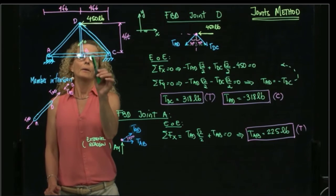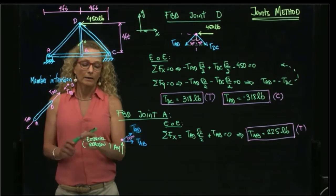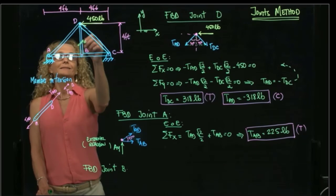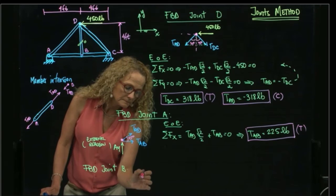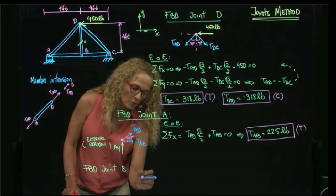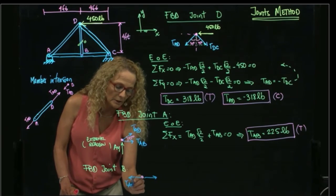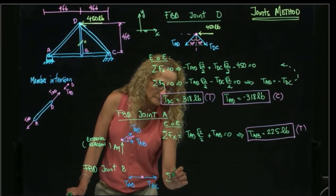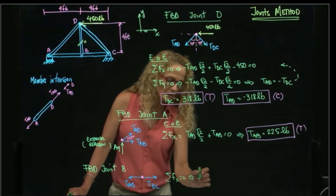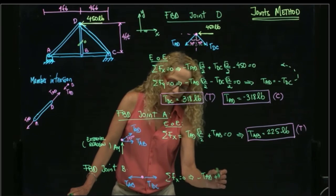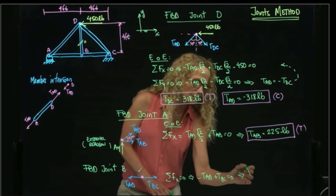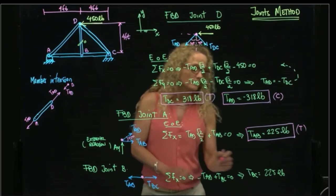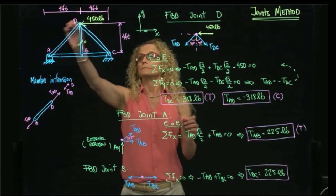My final member that I have to find the force in is this one right here. And therefore, I do the free body diagram of joint B. And since this equals zero, joint B has only two forces, TAB, which I already found, and TBC. And as you see here, adding forces in X means that negative TAB plus TBC equals to zero. Therefore, TBC equals to TAB, which is also 250 pounds. Also positive, it means that it is also in tension.